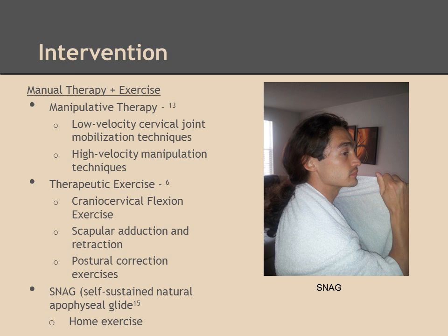For the intervention, the manual therapy and exercise group included a manipulative therapy treatment by Maitland et al., which consisted of low-velocity and high-velocity manipulation techniques. The therapeutic exercise portion had patients performing low-load endurance exercises for neuromuscular education of deep neck flexors. They also performed scapulary traction and adduction exercises, particularly targeting the serratus anterior and lower trapezius muscles, and postural correction exercises. Patients were treated to sit with natural lumbar lordosis while gently keeping the scapulas retracted and adducted and kept the longus coli engaged to promote the most efficient posture.